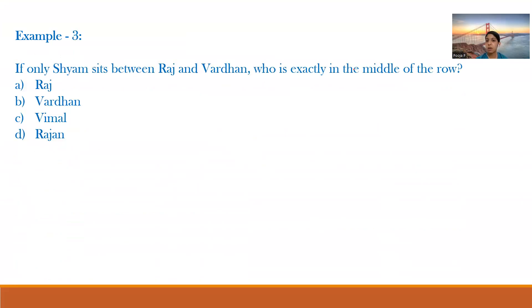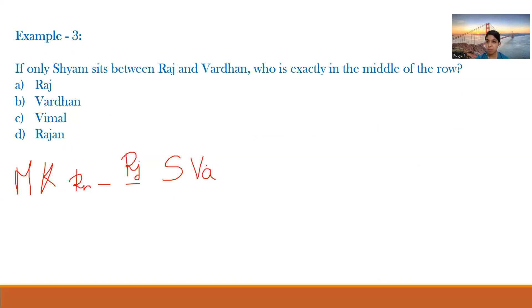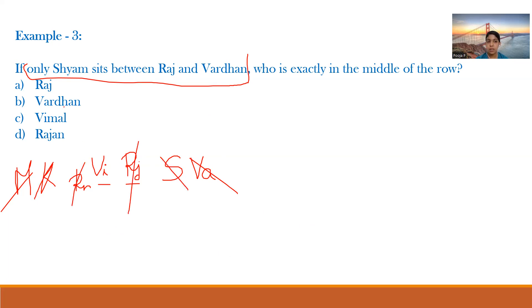Sub-question 3: If only Sham sits between Raj and Vardhan, who is exactly in the middle of the row? We have Mitra, Kishan, Rajan, [blank], [blank], Sham, Vardhan. For only Sham to sit between Raj and Vardhan, Raj must be placed immediately after Sham — so: Raj fills one blank, Vimal fills the other. The arrangement is Mitra, Kishan, Rajan, Vimal, Raj, Sham, Vardhan. The middle position (4th) is Vimal. The answer is option C: Vimal.